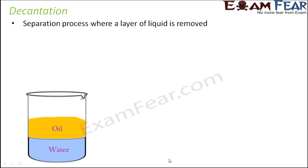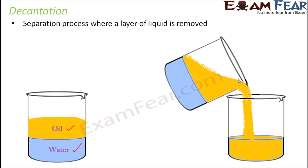Consider two liquids that do not mix with each other — oil and water. If you put some water and oil in a glass and try to mix them, they will never mix. Oil is lighter than water, so the oil floats on top, forming two separate layers. You can then pour the top layer of oil into another container, so after decantation you have oil in one container and water in the other.